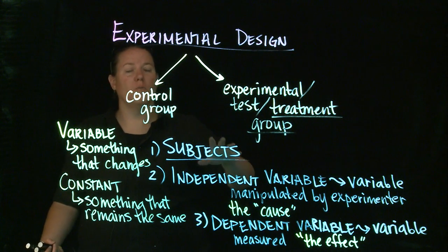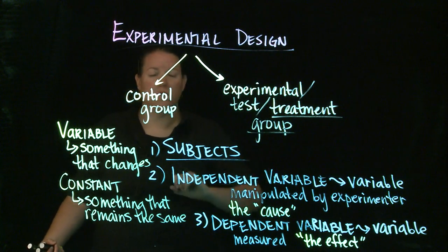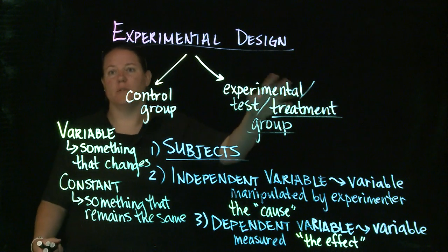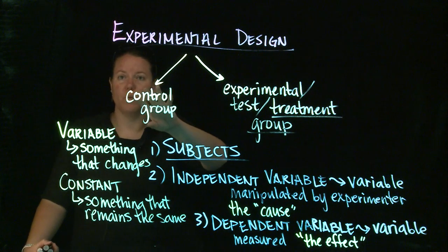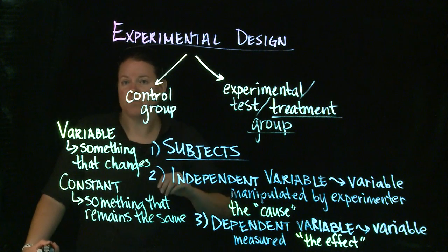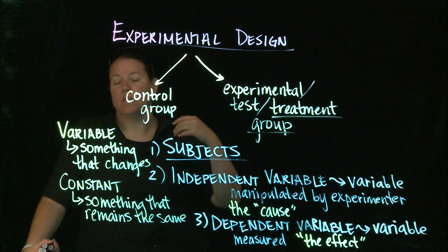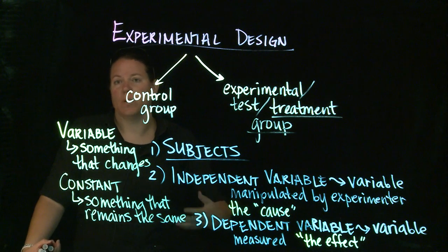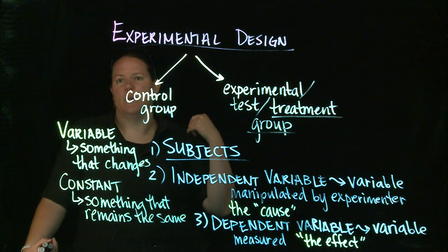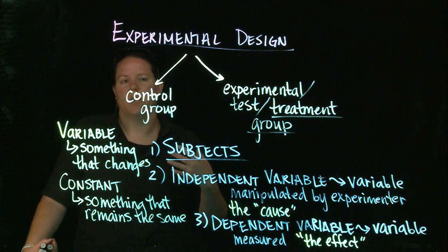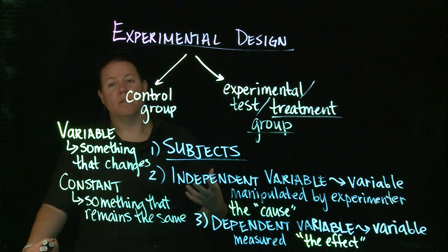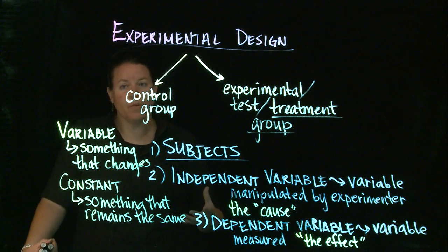Then you would want to give the treatment group perhaps the new drug, and then the control group should get something as well. That could be something that is currently on the market. It could be the placebo kind of moment where they're just given a sugar pill. It could be something else that also is helpful.